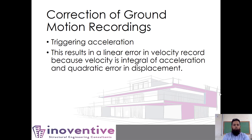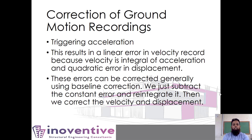This triggering error often results in a linear error in the velocity record, because velocity is the integral of acceleration, and a quadratic error in displacement. If we have a constant error in acceleration, we get a linear error in velocity and a quadratic error in displacement. We can correct these errors with what is called baseline correction — we subtract out the constant error in acceleration and reintegrate. For errors that are not constant in acceleration, such as a linear error, we perform baseline correction in signal processing and determine which type gives the best-looking plot.